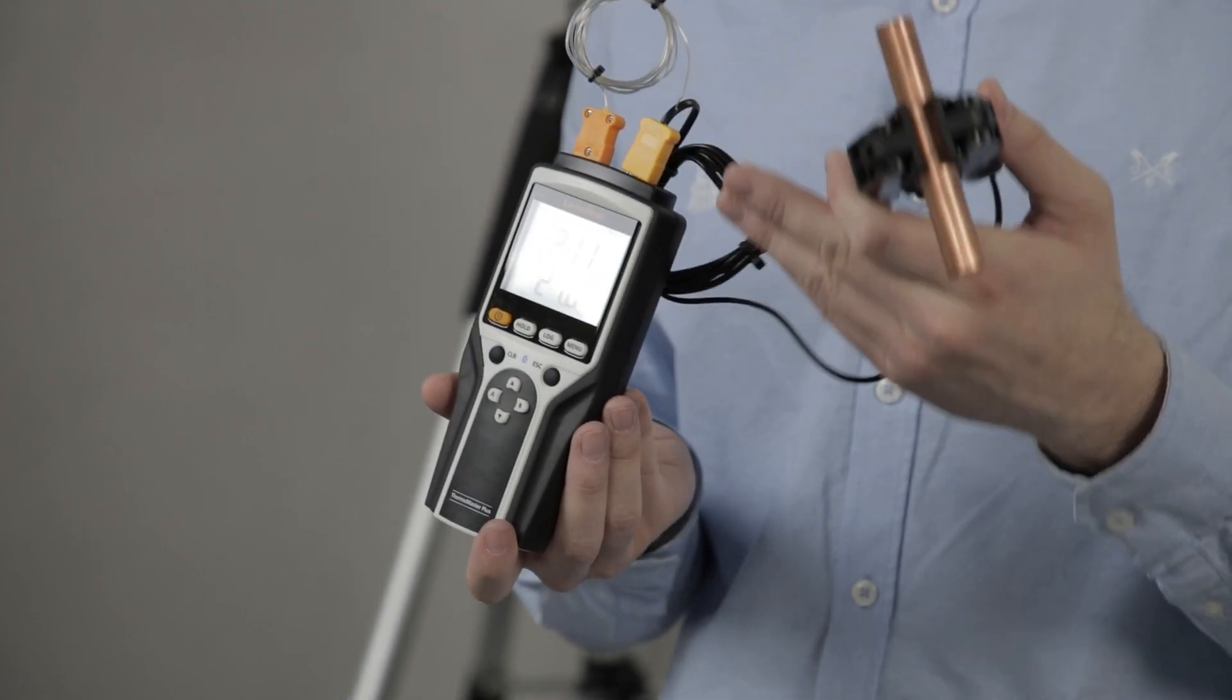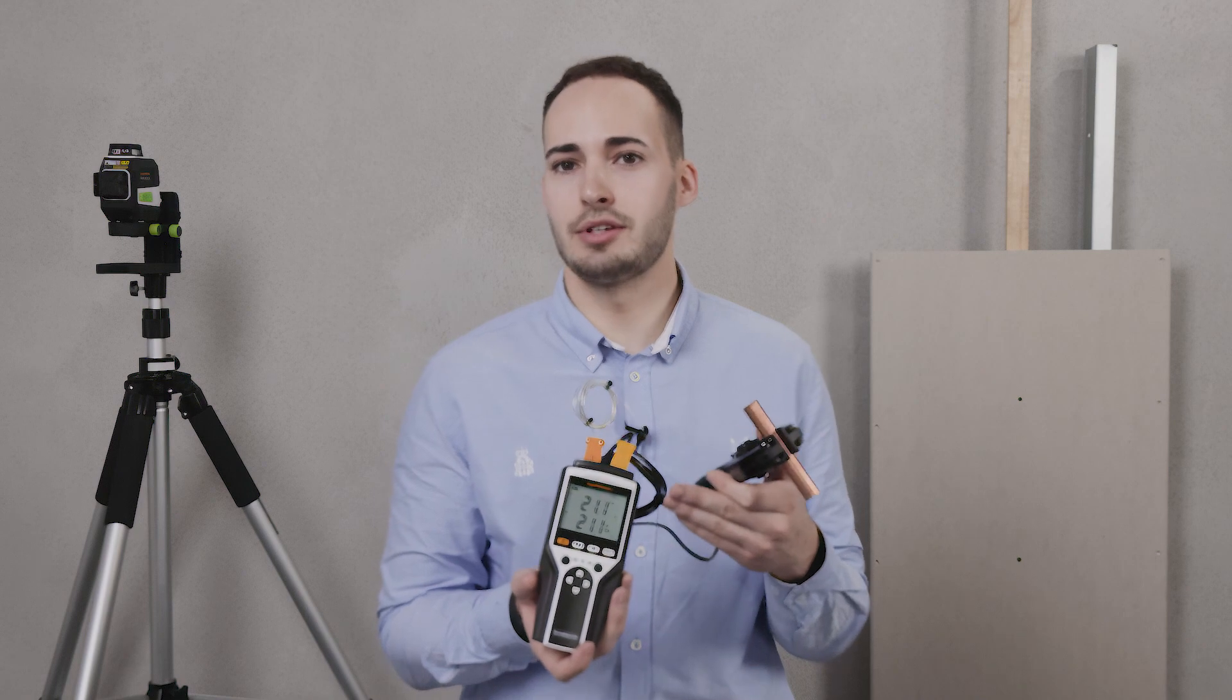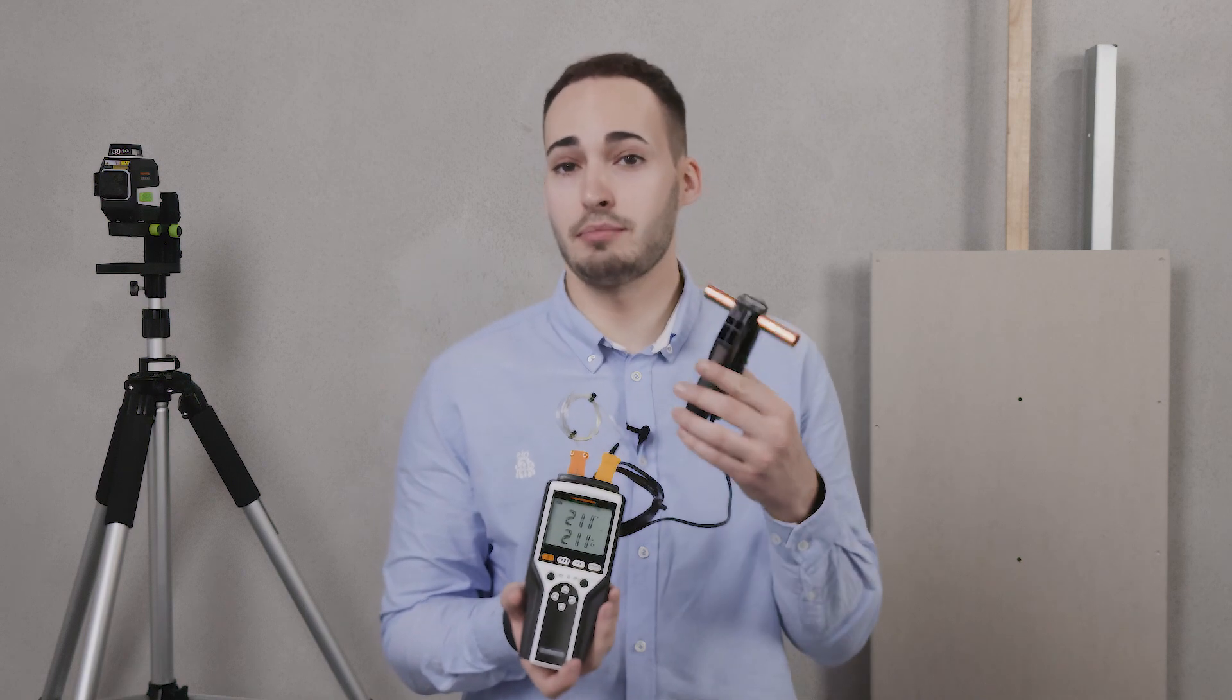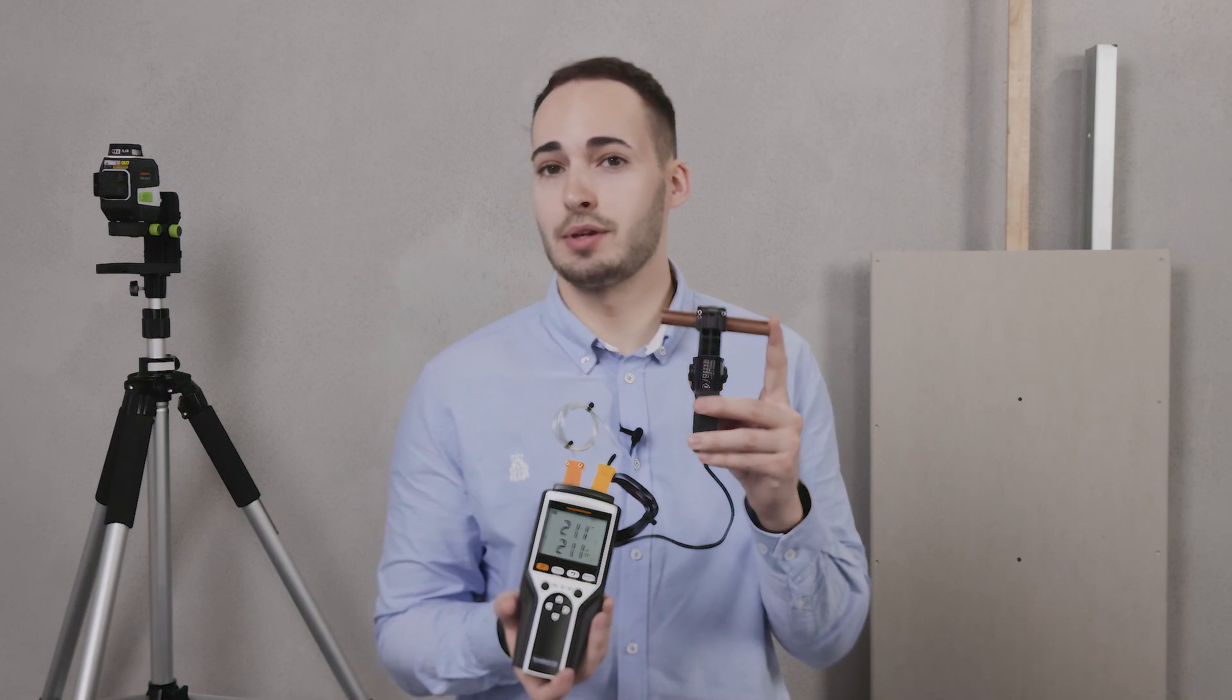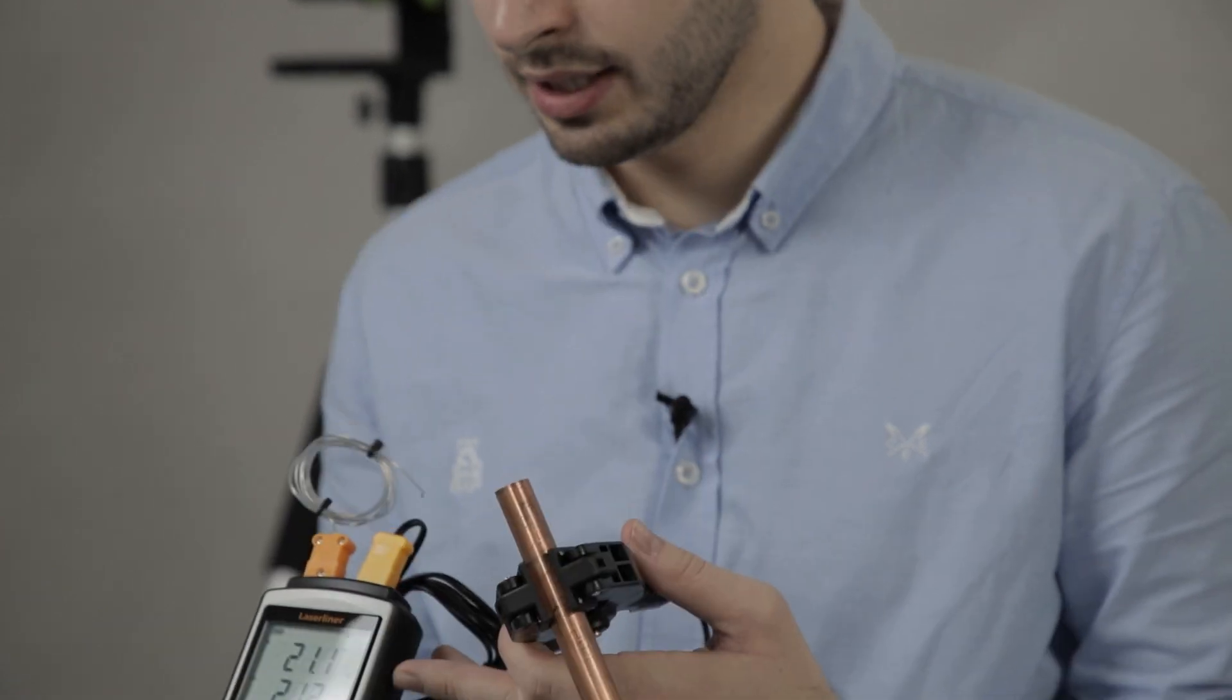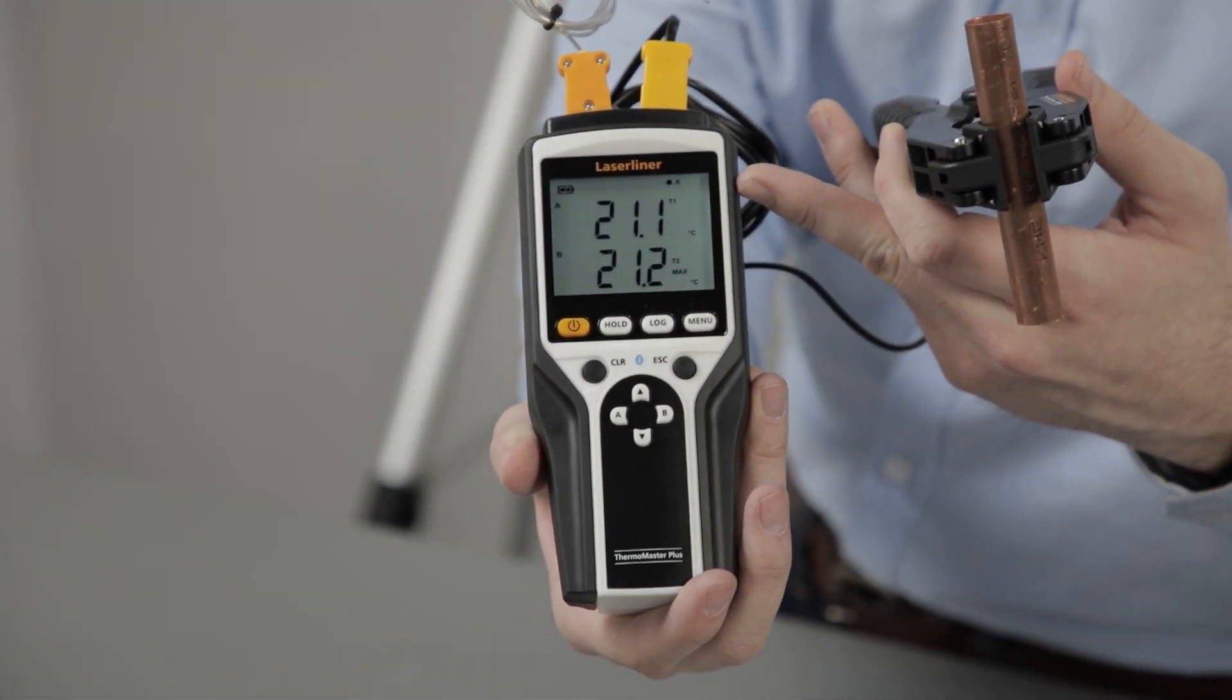We also have an air sensor for measuring temperature within the air, a tip sensor for measuring into materials such as a liquid, and a clamp sensor which can be used for detecting heat temperatures on a pipe. As you can see on the screen here, the value is then displayed.